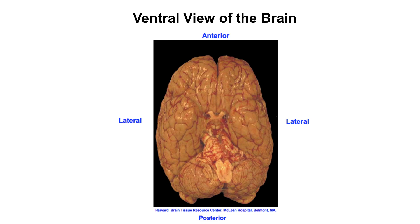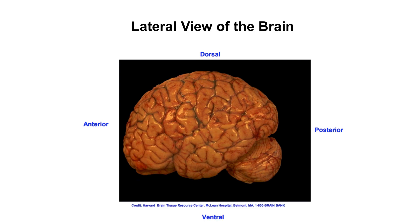If you flip that same brain around, you will have a ventral view of the brain. Here's the front, here's the back. Towards the side is lateral, going inward is medial, and this side is the ventral side. The top of the brain is the dorsal side. In a lateral view, dorsal is to the top, ventral is towards the bottom, posterior is towards the back, and anterior is towards the front.